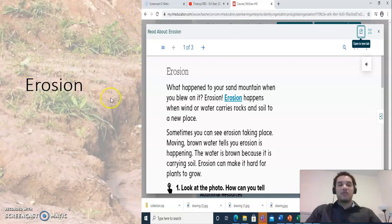So our first word is erosion. So we're going to review. So remember, erosion. So it says, what happened to your sand mountains when you blew on it? Erosion. Erosion happens when wind or water carries rocks and soil to a new place. Sometimes you can see erosion taking place. Moving brown water tells you erosion is happening, right? So the moving brown water, the water is brown because it is carrying soil. Erosion can make it hard for plants to grow.